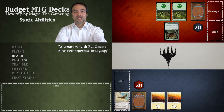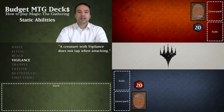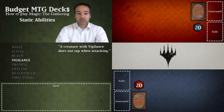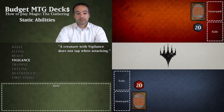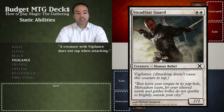Now we can have a look at vigilance. A creature with vigilance does not tap when it attacks. Normally when we declare attackers we tap them, but since creatures with vigilance don't tap when attacking we simply push them a little bit forward to show that they're attacking. The benefit is that we can use it to attack and then in our opponent's turn we can use it to block. An example of a creature with vigilance is Steadfast Guard — attacking does not cause this creature to tap.